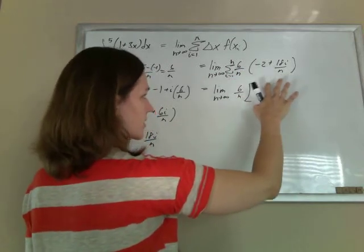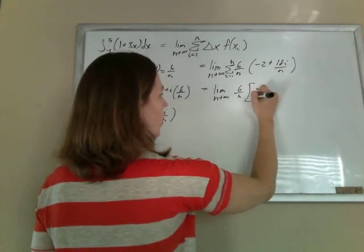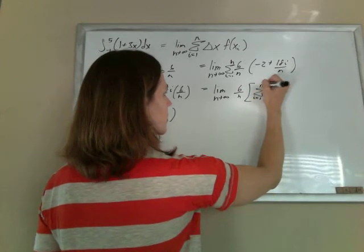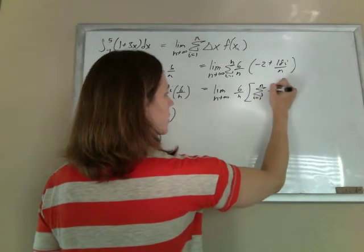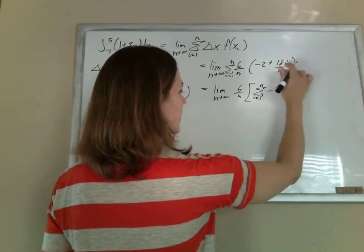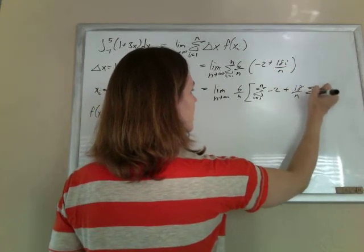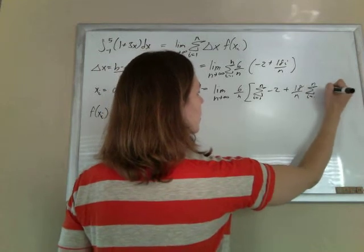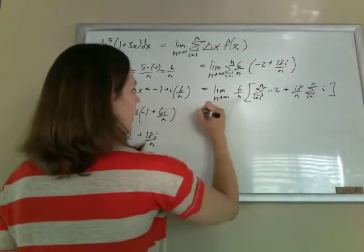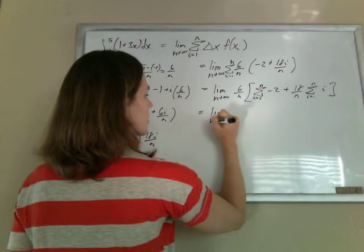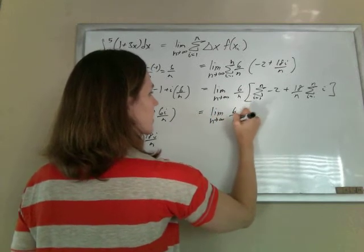There's properties of sums, you can do what you think you can. So I'm going to break this sum up into negative 2 plus this sum, pulling the 18 over n to the front, leaving me with the i still inside. And the reason why this is nice is because we have formulas for these things.